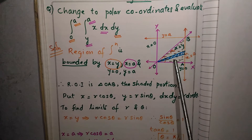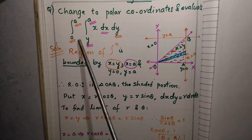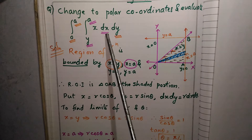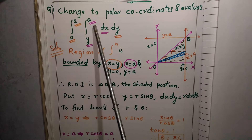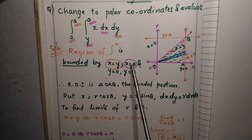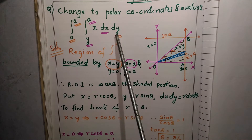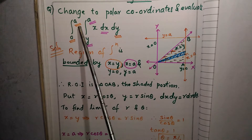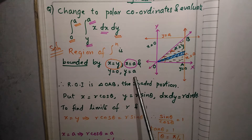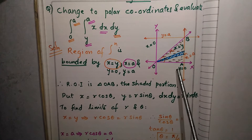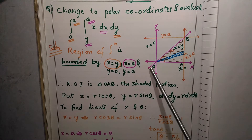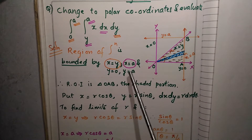The region of integration will be a closed region bounded by these limits. Since dx is the inner integral, the limits of X are X equal to Y and X equal to A. And since dy is the outer integral, the limits for Y are Y equal to 0 and Y equal to A. To draw the diagram: X equal to Y is a straight line passing through the origin.